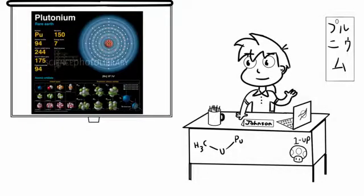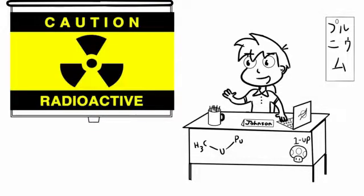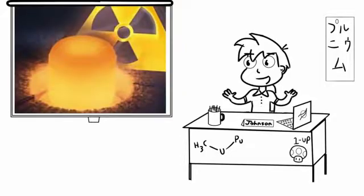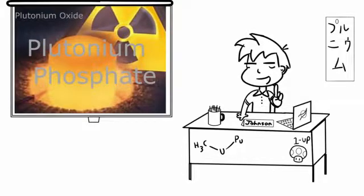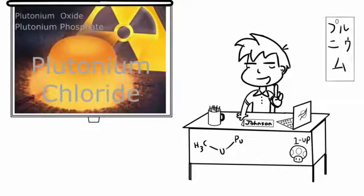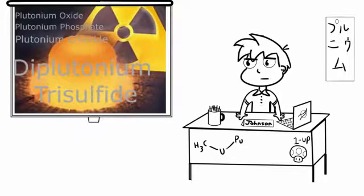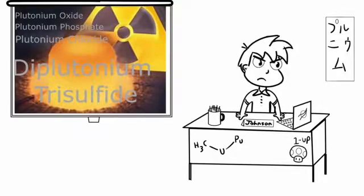Plutonium is one of the most complex man-made elements, as well as being radioactive, so there aren't a lot of common compounds made with it. However, a few compounds that do have plutonium in them are Plutonium Oxide, Plutonium Phosphate, Plutonium Chloride, and Diplutonium Trisulfide.